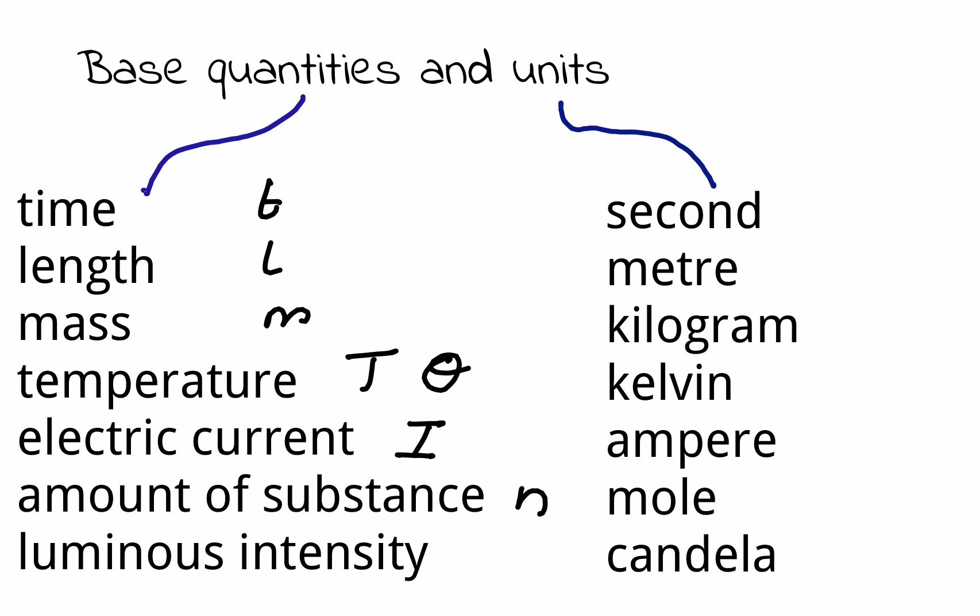For time, the SI unit is the second. For length, the meter (m). For mass, the kilogram (kg). For temperature, the kelvin (K). For electric current, the ampere (A). For amount of substance, the mole (mol). And for luminous intensity, the candela (cd).